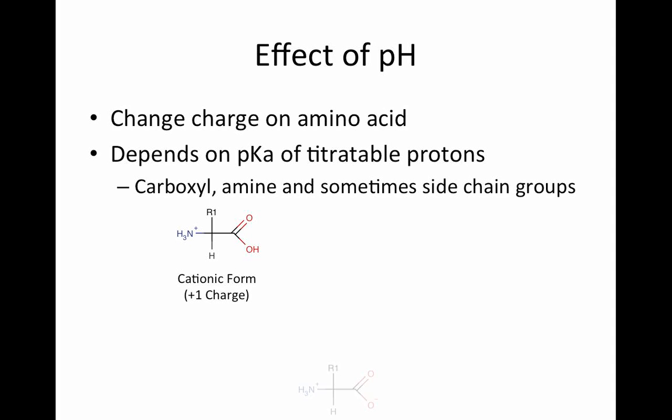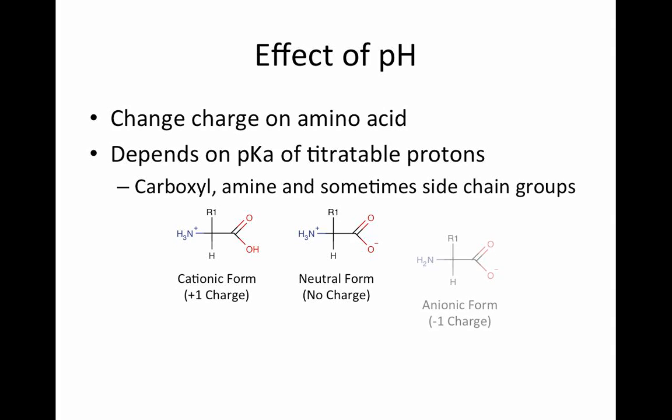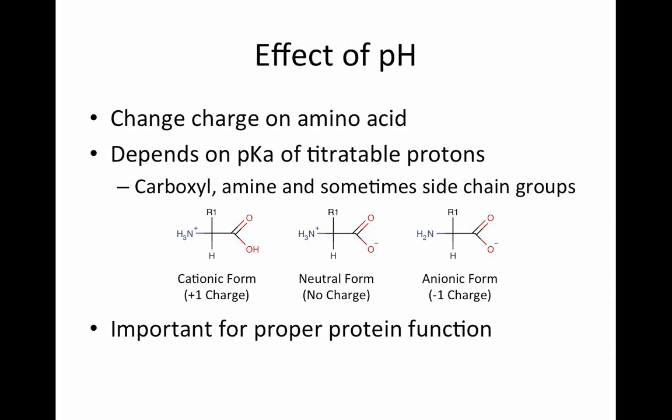As we increase the pH, the carboxylic acid group is deprotonated and the overall charge is now neutral. In a basic solution, even the amine group is deprotonated, and the amino acid is left with an overall negative charge. This effect is very important in proper protein function. Amino acid charge plays a large role in determining the three-dimensional, or tertiary, structure of proteins. As such, a change in pH can have a greatly adverse effect on the conformation of proteins by changing the charges on the individual amino acids.